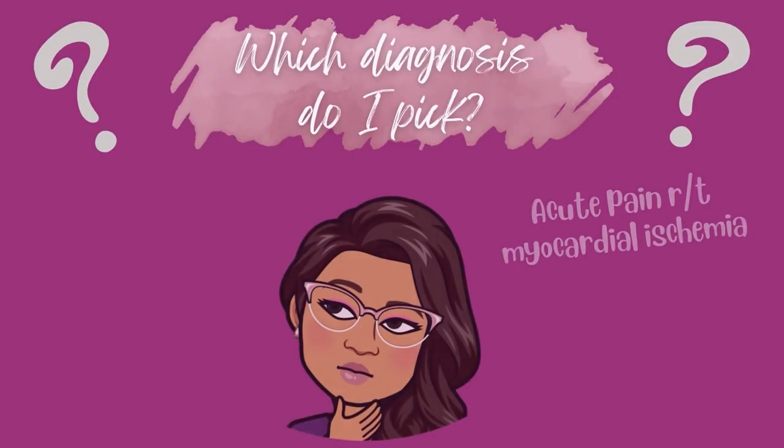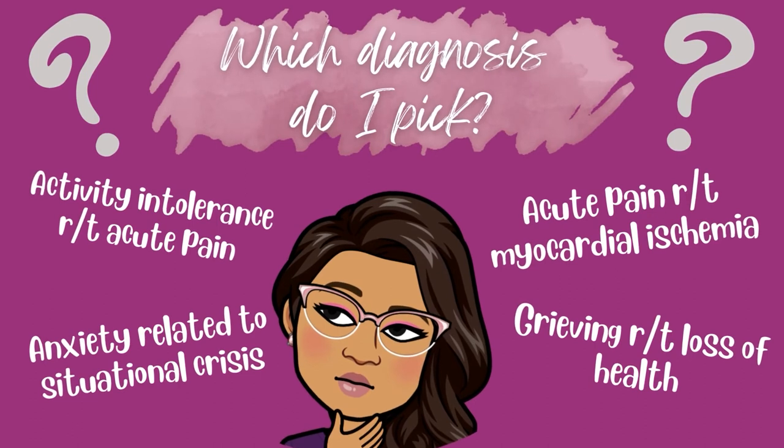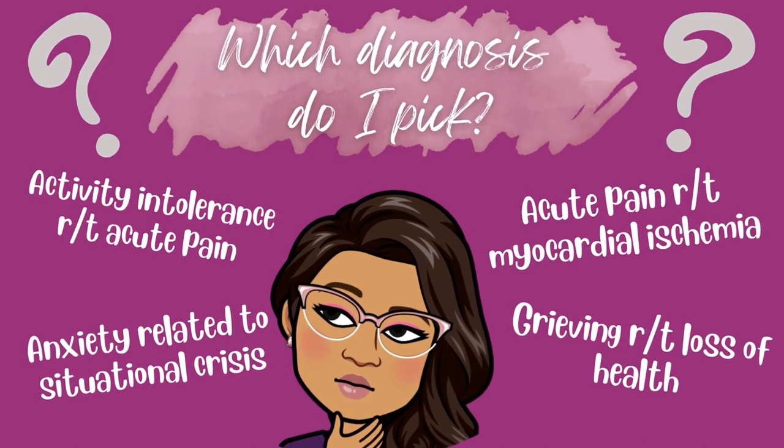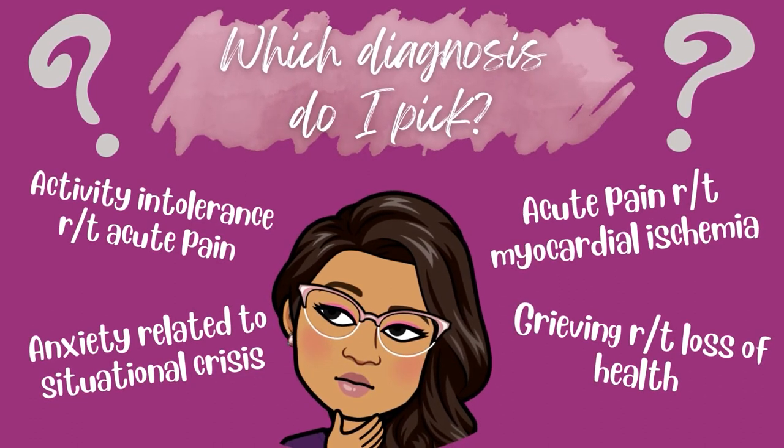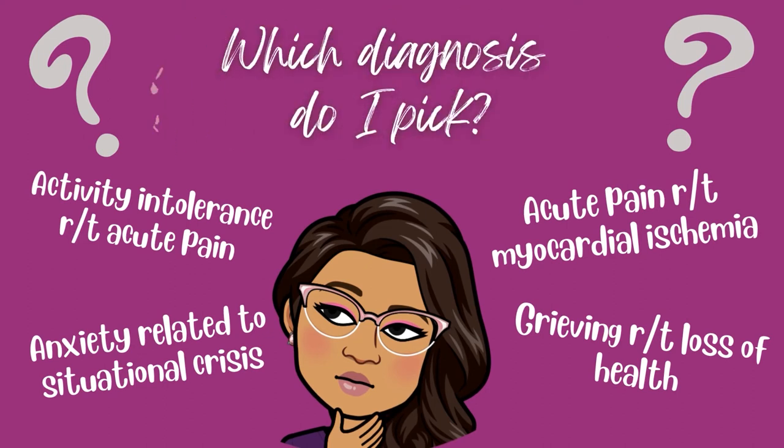Now you've found a list of possible nursing diagnoses in section two or from the front of your textbook, but you still need to decide whether that diagnosis meets your client's condition or is appropriate for your client. In other words, we need to verify the accuracy of that nursing diagnosis and ensure it's appropriate for our patient. Don't just pick any nursing diagnosis just because it sounds good — the one you choose should make sense for your patient's condition and the assessment data you collected.